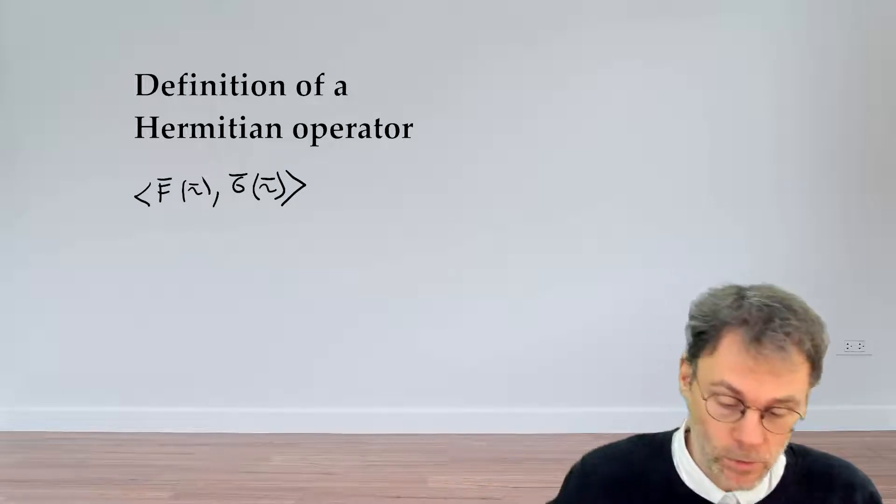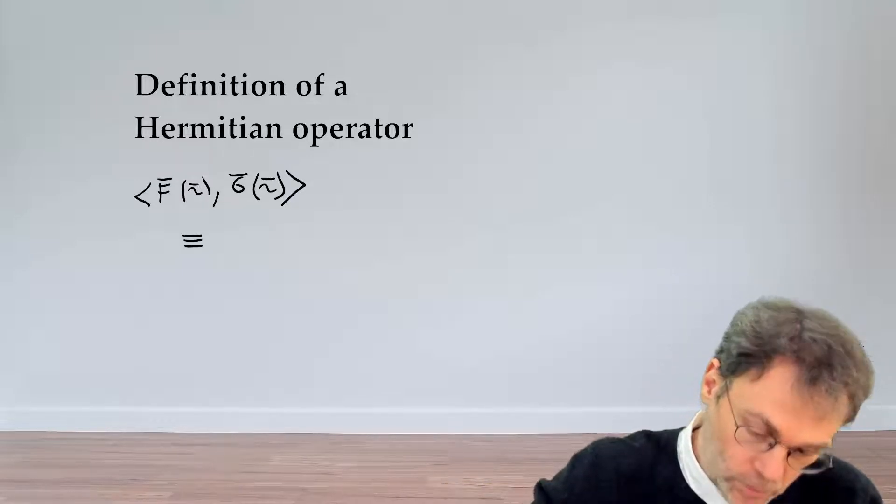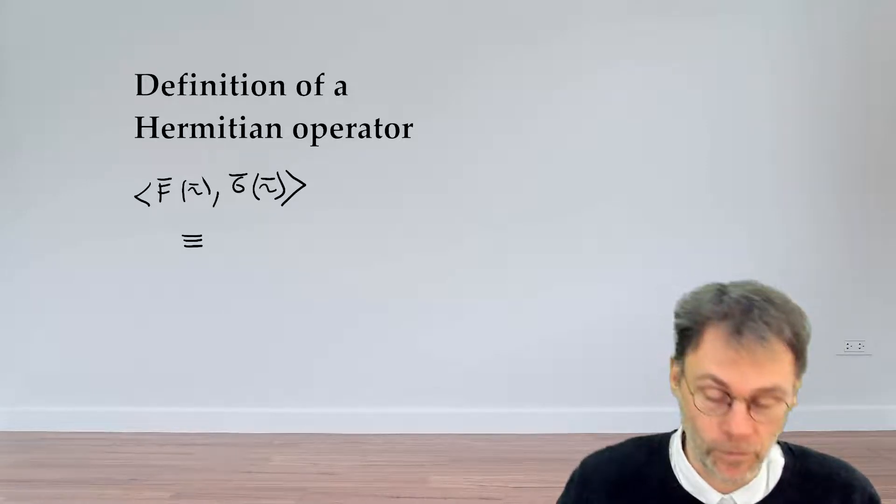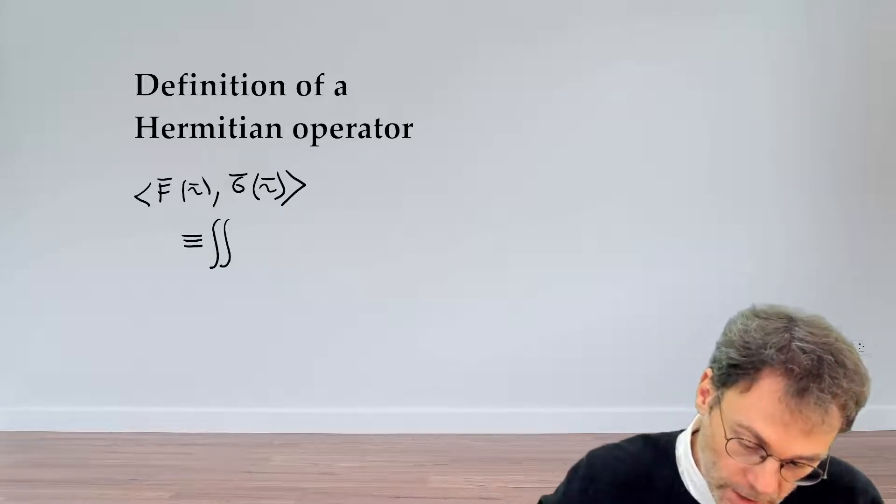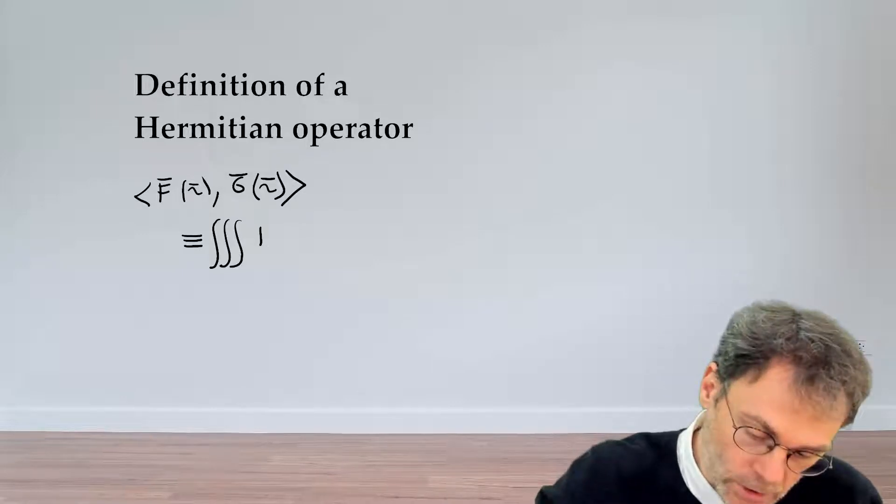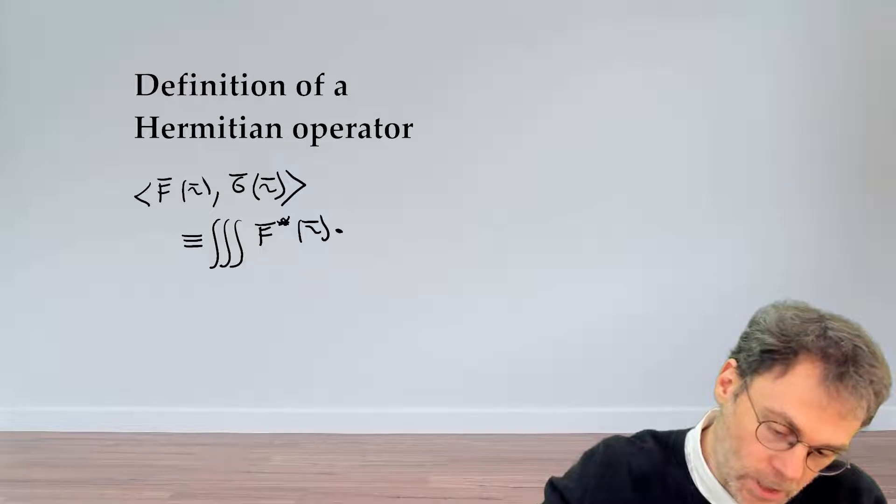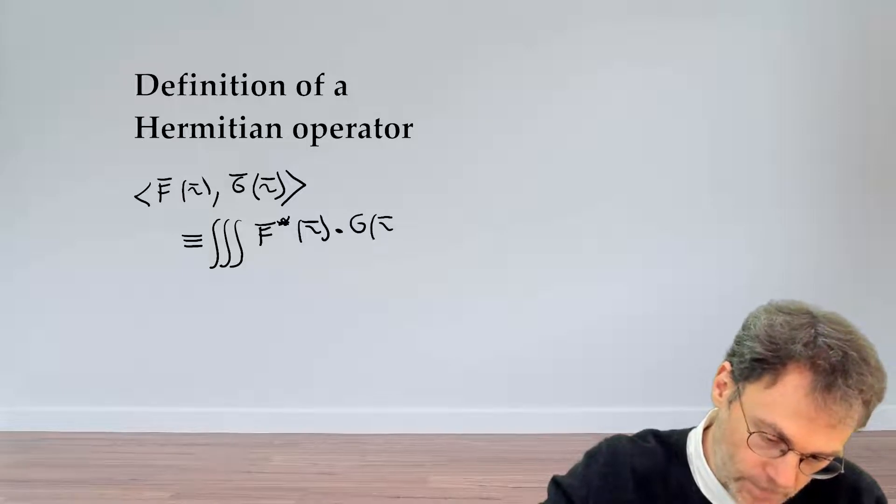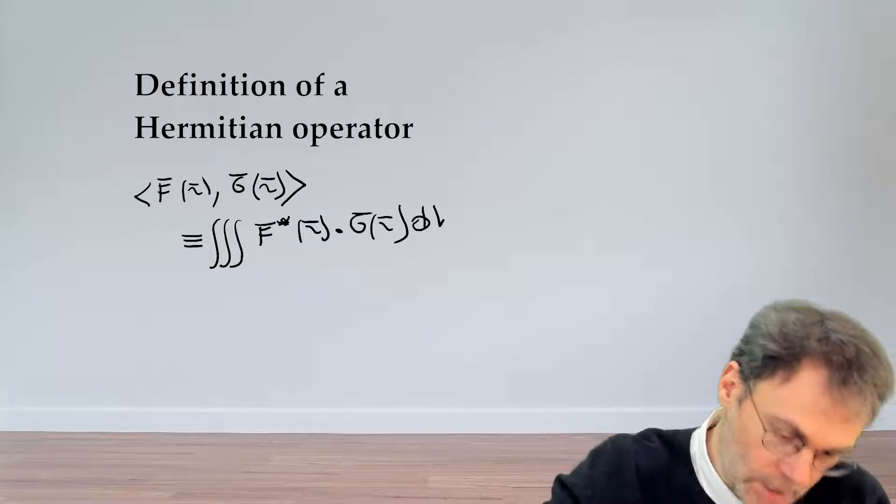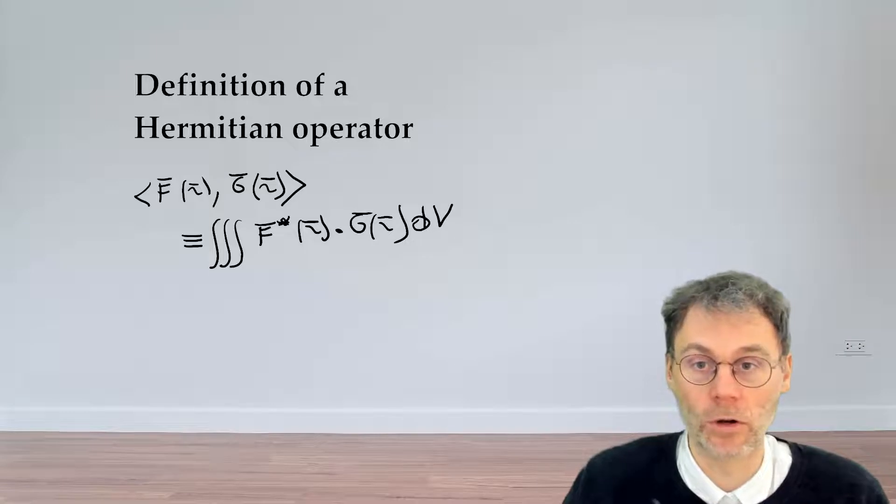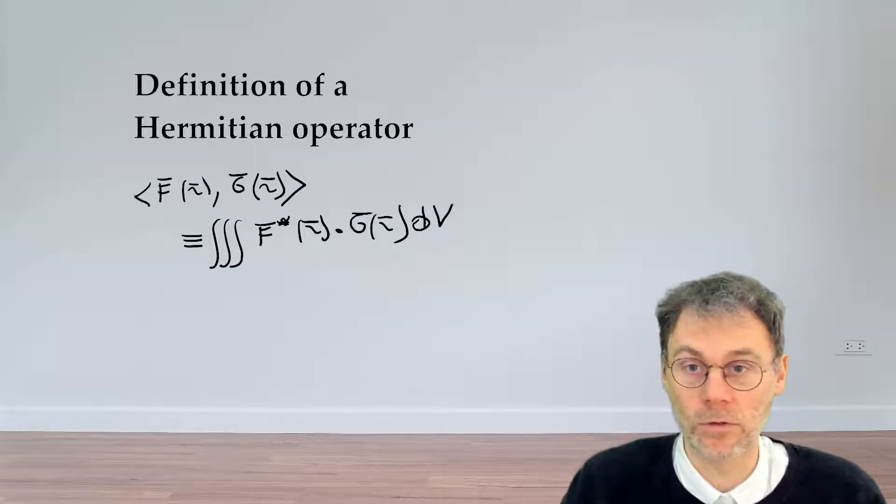What we're going to use in this chapter is the following definition. We're going to define that inner product between these two functions as being the volume integral of the following quantity. So we take the complex conjugate of f, and then we take the scalar product with g, and then we integrate the end result out over the entire volume V. This is the definition that we're going to use.